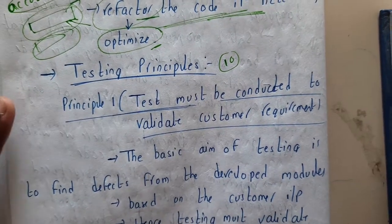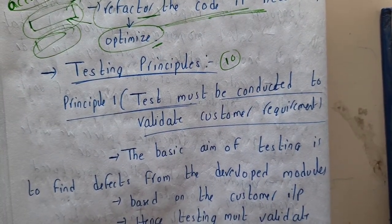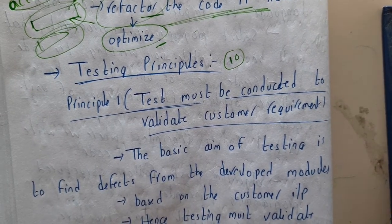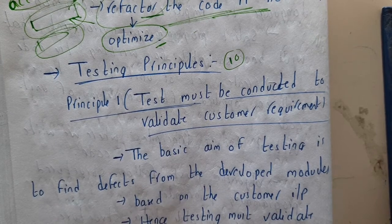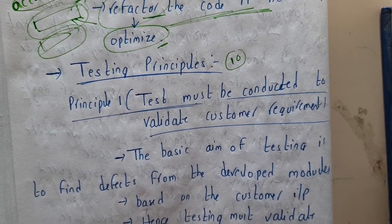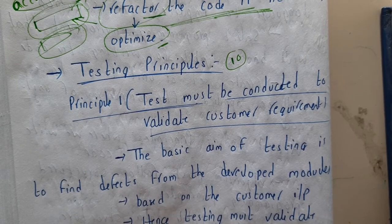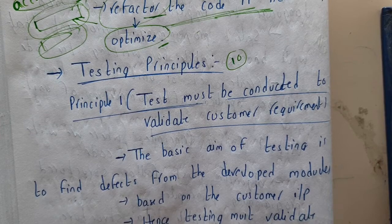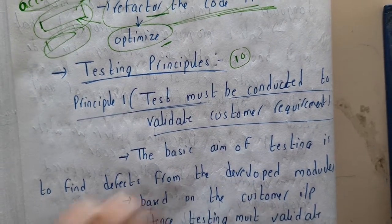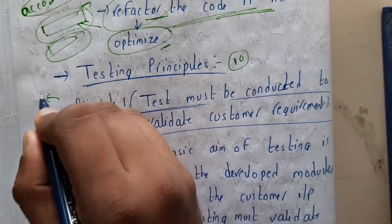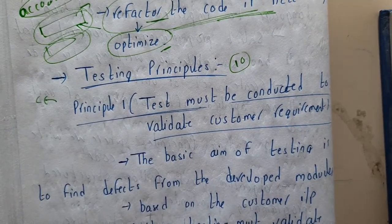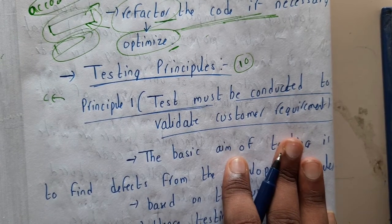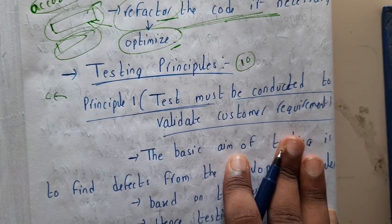Hello guys, we are back with our next lecture. In this lecture, let us go through testing principles. In our last lecture we went through coding principles. So in this lecture let us go through some testing principles. You might be wondering why we do testing — basically testing is done to check whether the client requirements are fulfilled or not, and also for bug testing.